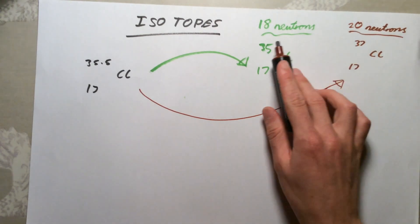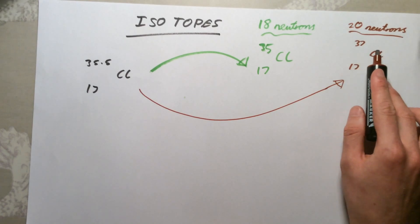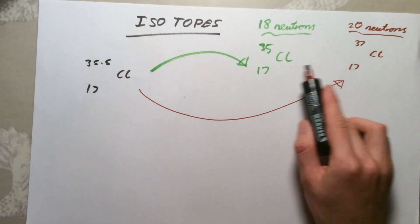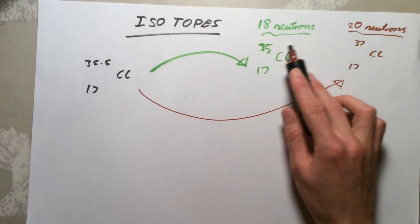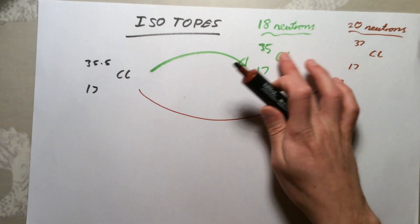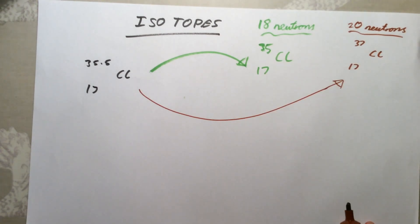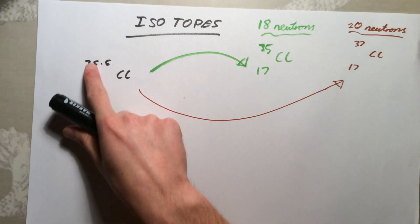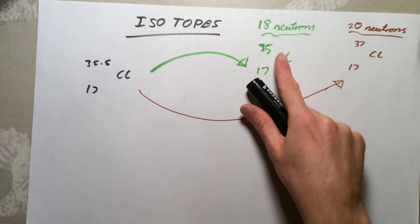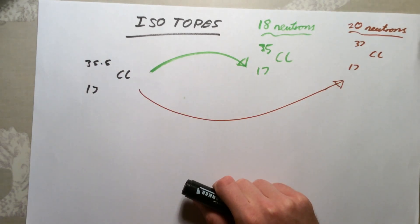The second isotope we can have, or second different atomic form of the same element, is actually 37, 17, Cl. This one has got 37 minus 17, which is 20 neutrons. Just a quick recap: isotopes are different atomic forms of the same elements with the same number of protons and electrons but different numbers of neutrons. Literally the only difference between these two atoms is that they weigh a slightly different amount. They've got different numbers of neutrons. But then surely our what we call relative atomic mass, this number here, must just be an average of 35 and 37, right? It should be 36. Well, no, not quite.